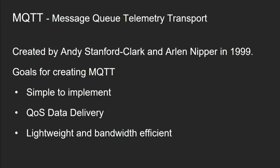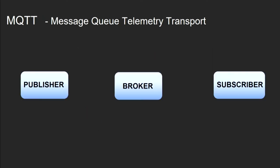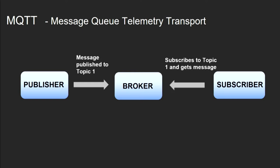Moving to the next slide, we will try to understand what MQTT is. MQTT is basically Message Queue Telemetry Transport Protocol. It is a simple, lightweight publish-subscribe protocol meant for IoT-based applications. It has three major components: publisher, broker, and subscriber. The publisher publishes a message under a particular topic on the broker, and the subscriber subscribes to that topic on the broker to get the message.